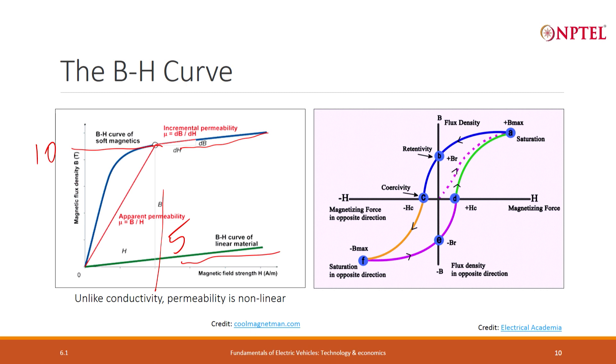I say okay, it is not increasing anymore, let me bring it back to 0. So what do I do? I reduce the current. But when I reduce the current, it does not come back in the same path. Instead it comes like this.